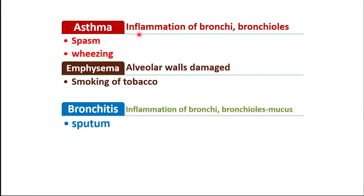Let's have a quick recap of the four respiratory disorders. In asthma, we find inflammation of bronchi and bronchioles and spasm in the smooth muscles of these respiratory tubes. The important symptom is wheezing — whistling sounds are produced during breathing. Emphysema is mainly caused by smoking of tobacco and the alveolar walls are damaged, reducing the surface area for diffusion of gases. In bronchitis, there is also inflammation of bronchi and bronchioles, but mucus production increases — that is the difference from asthma. The mucus is sent out at the time of coughing in the form of sputum or phlegm.